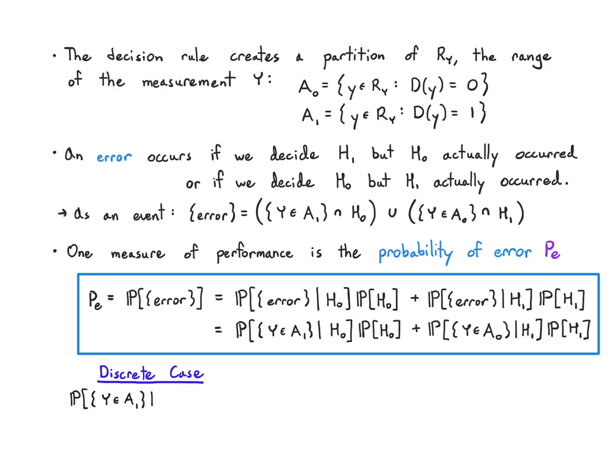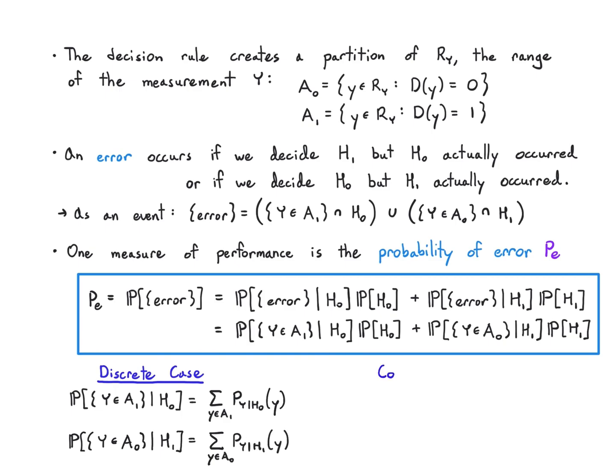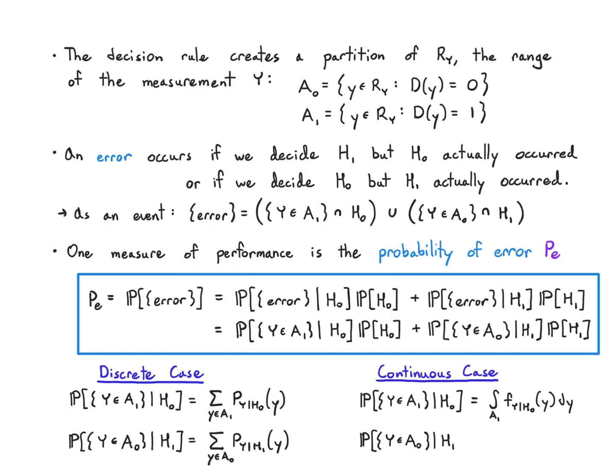In the discrete case, these error probabilities work out as sums. In the error event when it's actually h0 and I fall into a1, I sum up the probabilities from h0 over region a1. And in the case where it is h1 and I fall into a0, I sum up the probabilities of h1 over region a0. In the continuous case it's exactly the same thing, but replacing sums with integrals across regions a1 and a0. The key thing is that the region and the probability model are different — I'm integrating over a1 when it's actually h0, and over a0 when it's actually h1. Those are where I'm making mistakes.